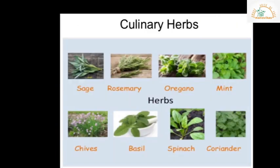Some herbs are used in cooking; they are called culinary herbs. Famous herbs used in cooking are rosemary, oregano, mint, basil, and coriander. They are used for flavoring and garnishing food. Herbs also contain nutritional benefits like vitamins and minerals, making them part of a balanced diet.